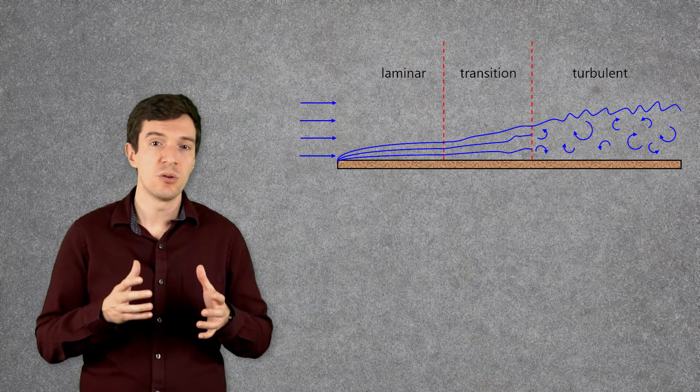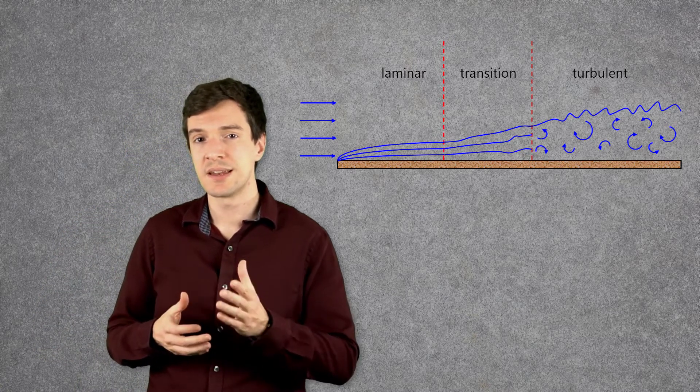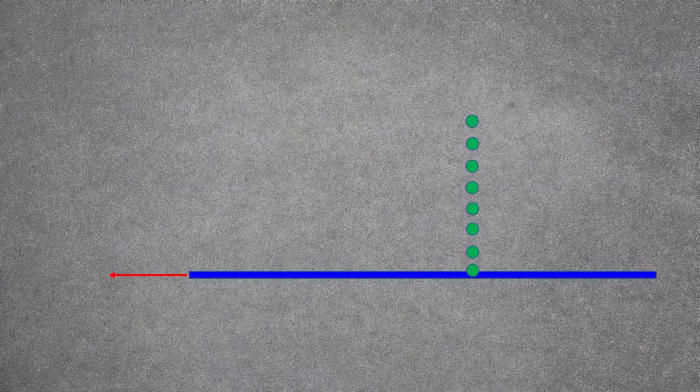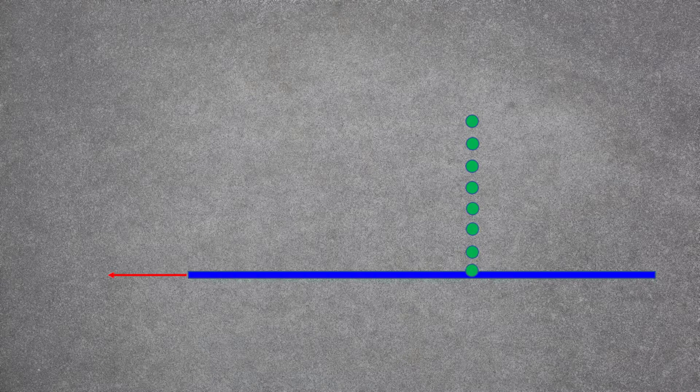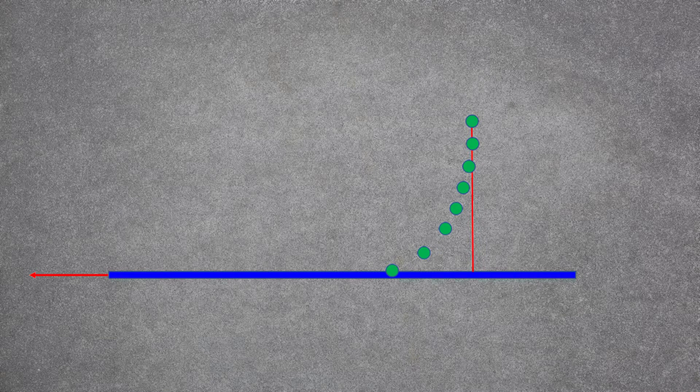Looking more in detail, we can also notice that the boundary layer is first smooth and then bursts into eddies and swirls. Now let's find out how a boundary layer forms. Let's imagine that we have a flat plate that is moving in a fluid with a certain velocity. We can describe the fluid at different locations from the flat plate using some particles.